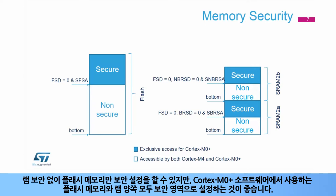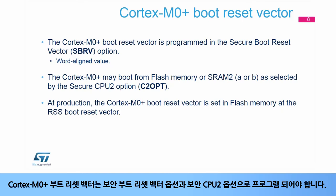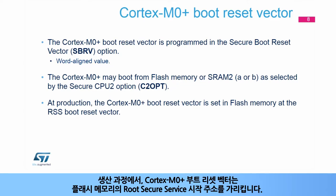It is possible to only secure the flash memory without any RAM security. However, it is recommended to secure both the flash memory and RAM used by the Cortex-M0 Plus software. The Cortex-M0 Plus Boot Reset Factor is to be programmed in the Secure Boot Reset Vector option and Secure CPU2 option. At production, the Cortex-M0 Plus Boot Reset Vector points to the root Secure Service Start Address in flash memory.